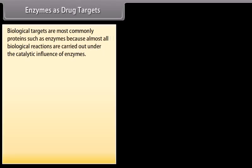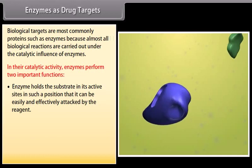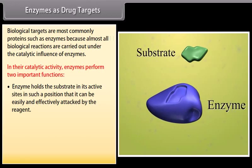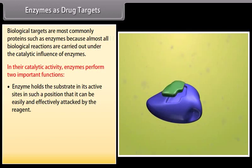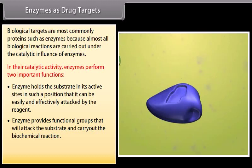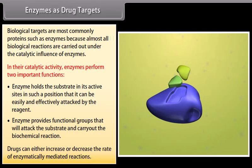Enzymes as drug targets: biological targets are most commonly proteins such as enzymes, because almost all biological reactions are carried out under the catalytic influence of enzymes. In their catalytic activity, enzymes perform two important functions: they hold the substrate at their active sites in a position so it can be easily and effectively attacked by the reagent, and they provide functional groups that attack the substrate and carry out the biochemical reaction. Drugs can either increase or decrease the rate of enzymatically mediated reactions.